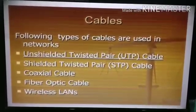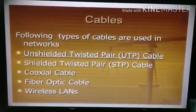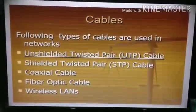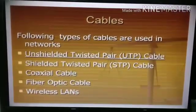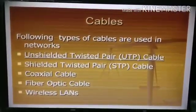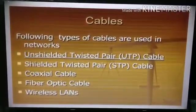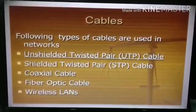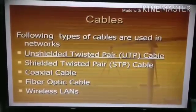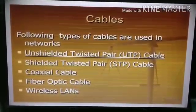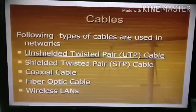Another type to connect computers in a network is wireless local area networks or wireless techniques. Here we can see there are two types of twisted pair cable: UTP, that is unshielded, and STP, shielded twisted pair cable.